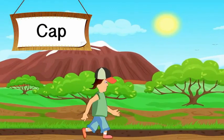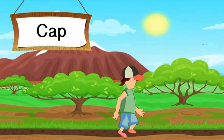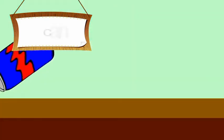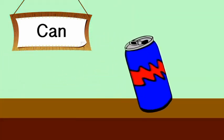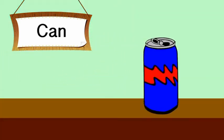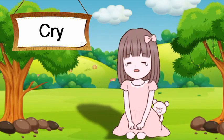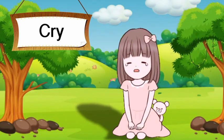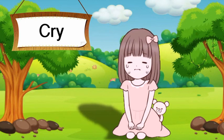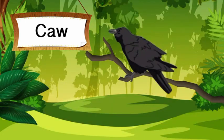C is for cap, that saves us from the sun in summer. C is for can, a food or drink container. C is for cry — we cry when we feel pain or sorrow. C is for cow.